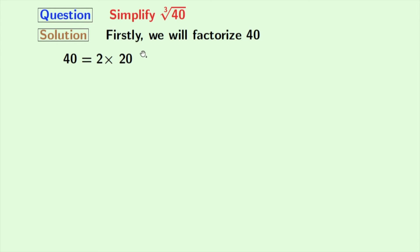We know that 20 is equal to 2 times 10. So we have it. Now 10 is equal to 2 times 5. Now look, all these numbers are prime numbers, so we will not factorize further.